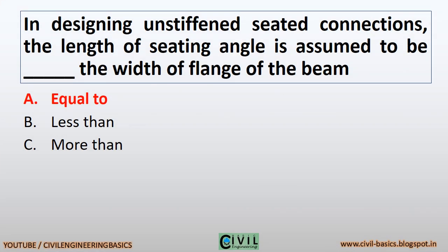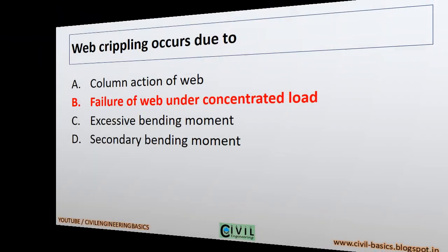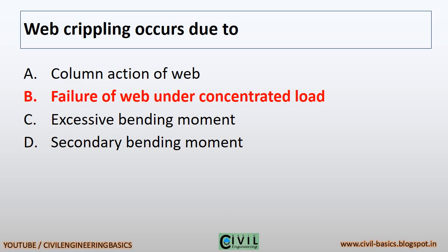In designing unstiffened seated connections, the length of the seating angle is assumed to be equal to the width of the flange of the beam. Unstiffened seated connections are used to transmit end reaction of beam up to 150 kN. Web crippling occurs due to failure of the web under concentrated load.